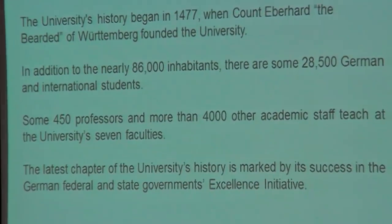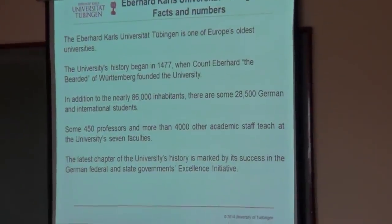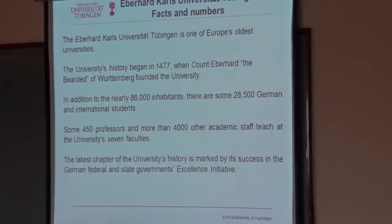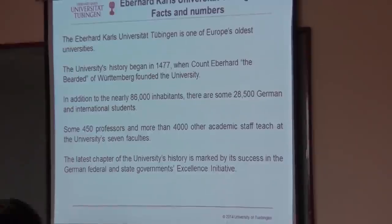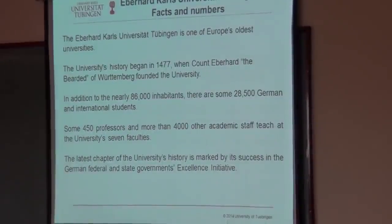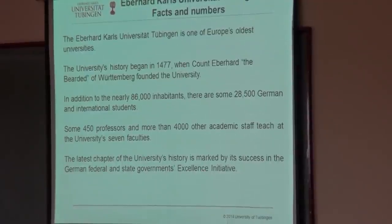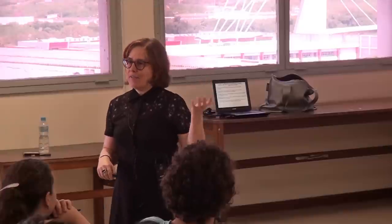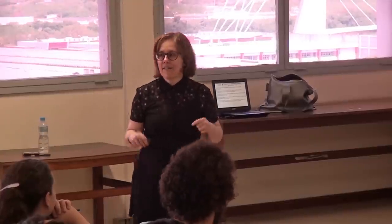A couple of facts about my university: the University of Tübingen is one of the oldest European universities, established in 1477 by Count Eberhard im Bart, who gave the name to the university. Tübingen is a very small city — around 86,000 citizens — and we have more than 28,000 students, so roughly one in four inhabitants is a student.